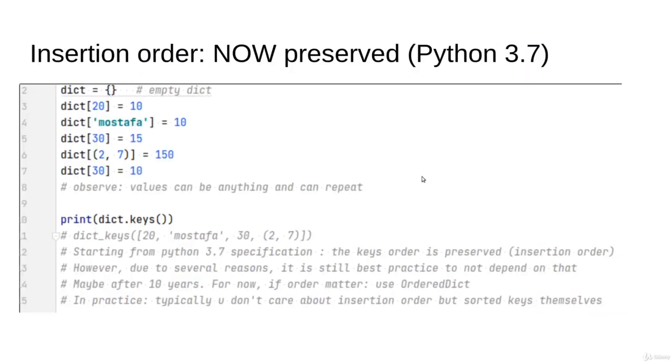Let's continue with insertion order. Let's say you inserted the following keys in the dictionary: 20, 'mustafa', 30, (2,7), and 30. There is what we call insertion order - we inserted in order 20, 'mustafa', 32, (2,7), and 30. Now, does the dictionary preserve this order? There is a history for this question.